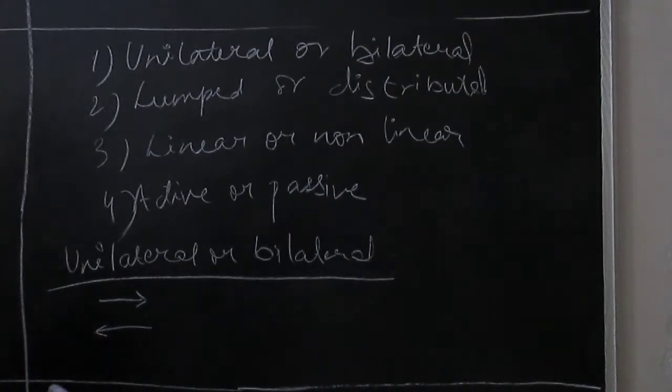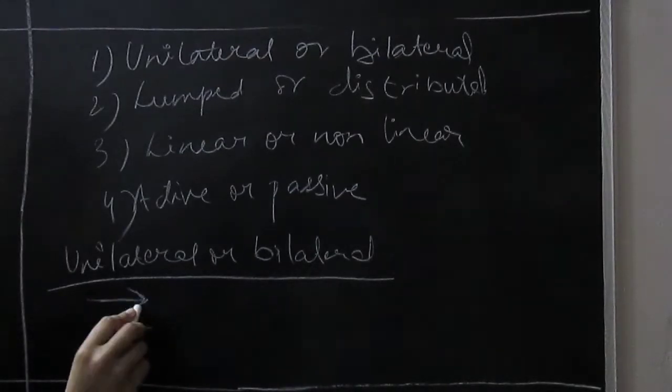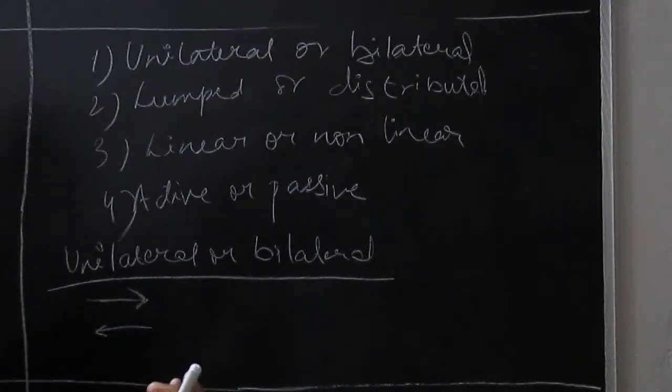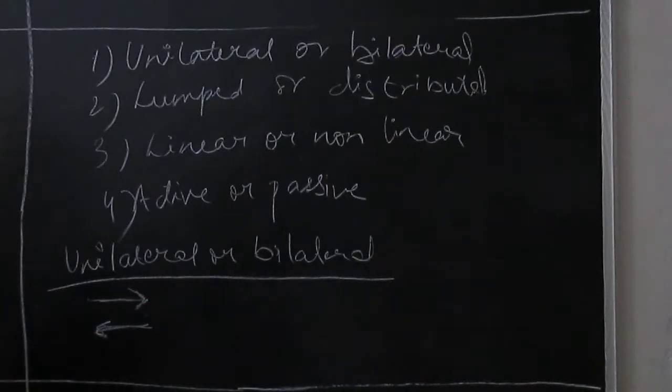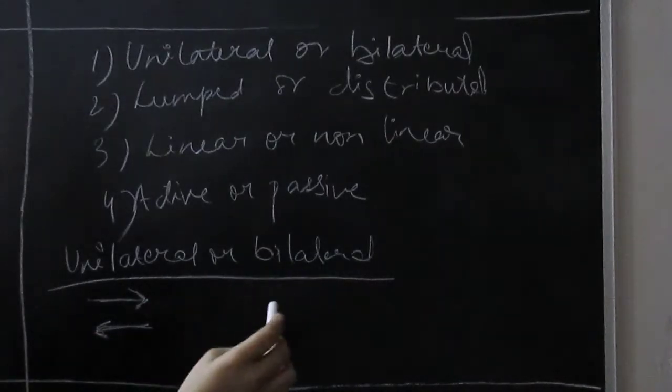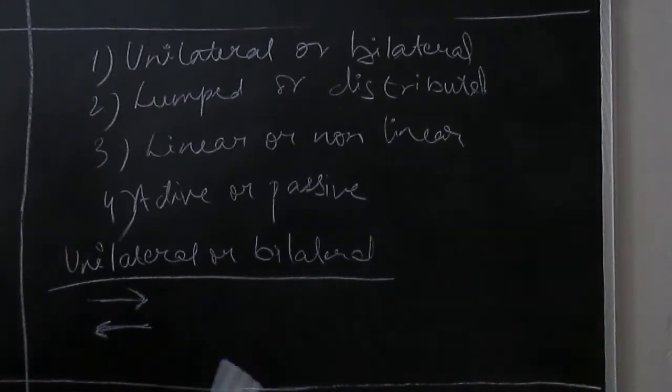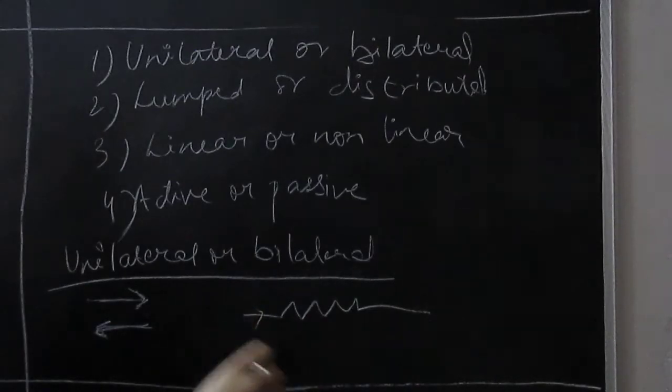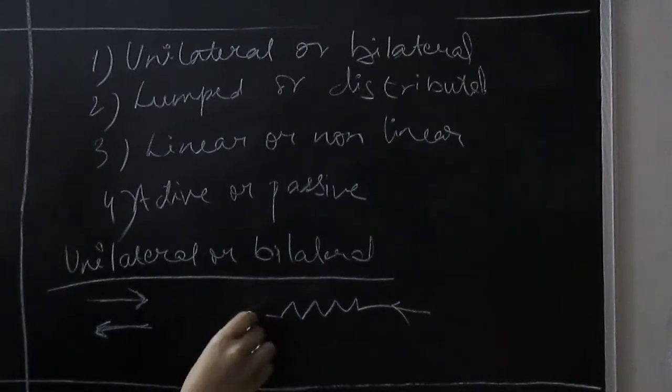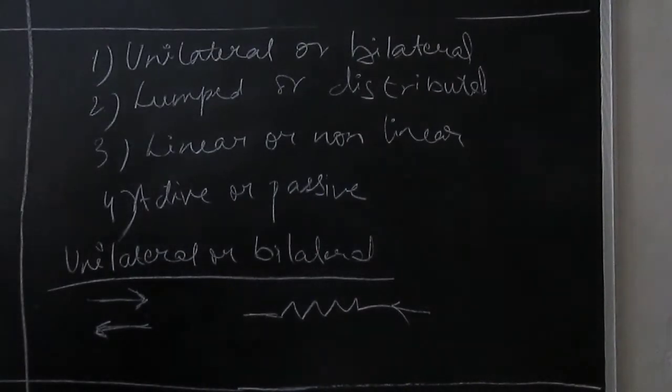But in bilateral, it is not like that. In bilateral the current direction doesn't matter. Like this is a resistor, either the current comes from here or from here, no difference. The cross potential drop will be the same. So this is the bilateral-unilateral difference.